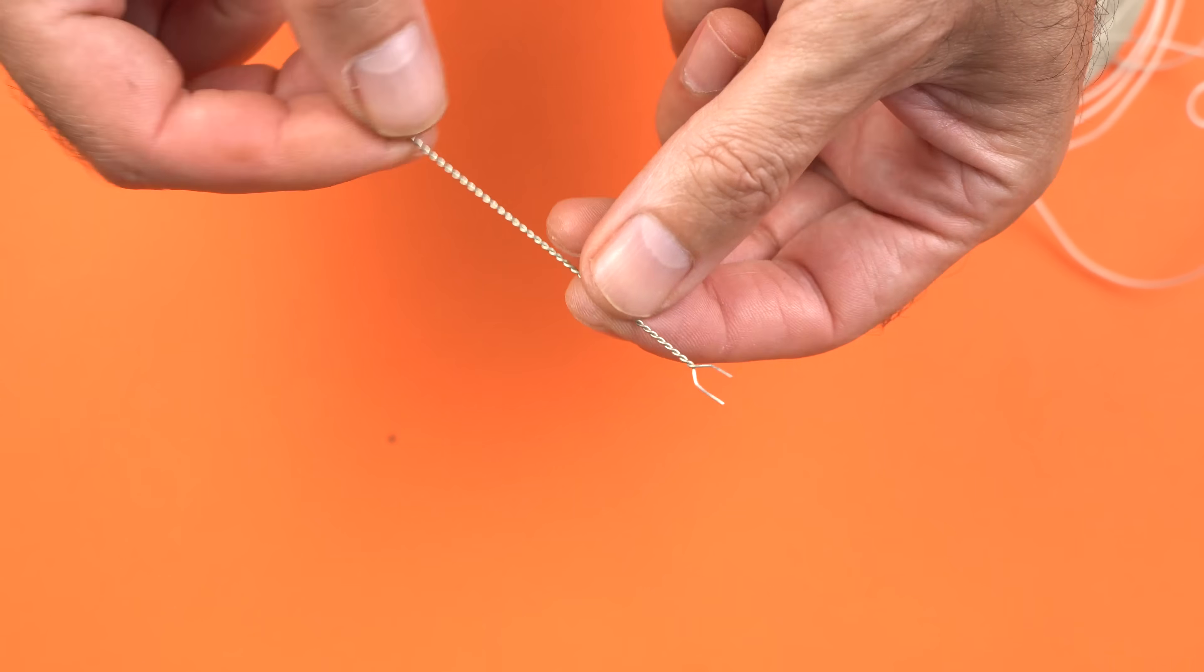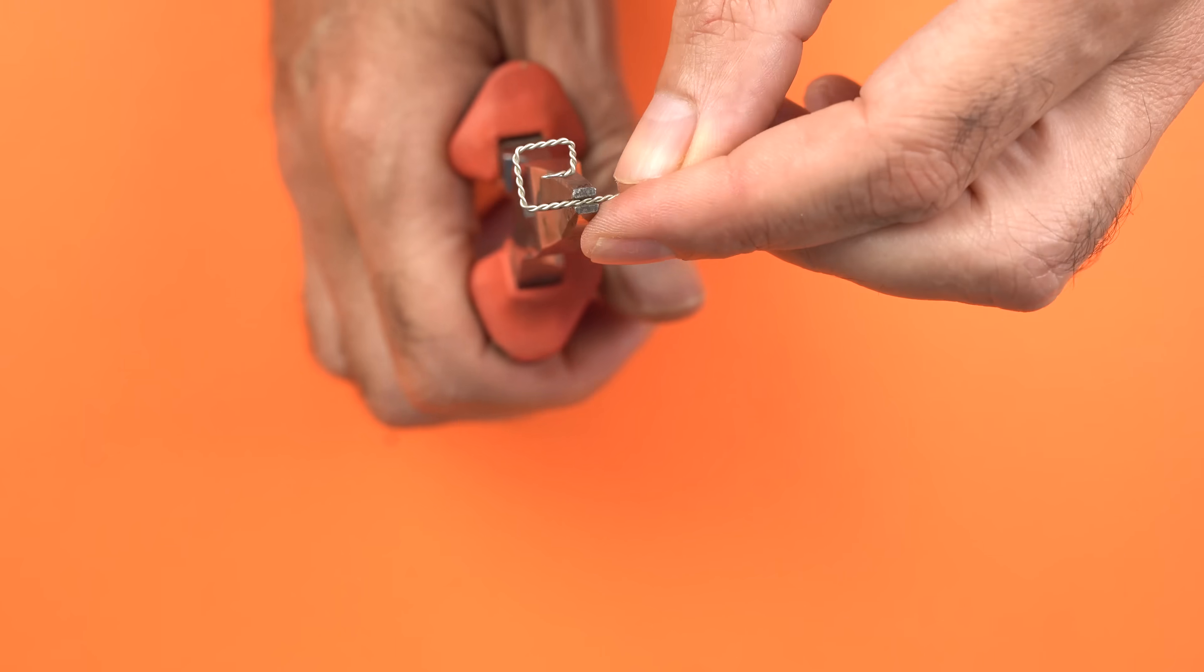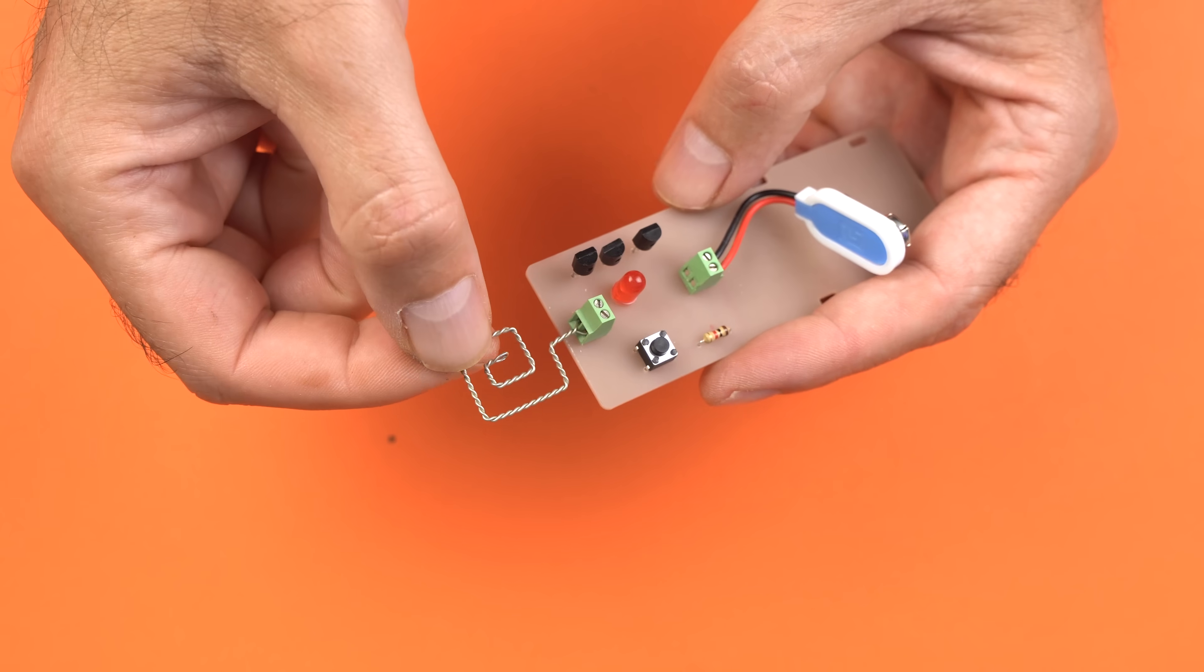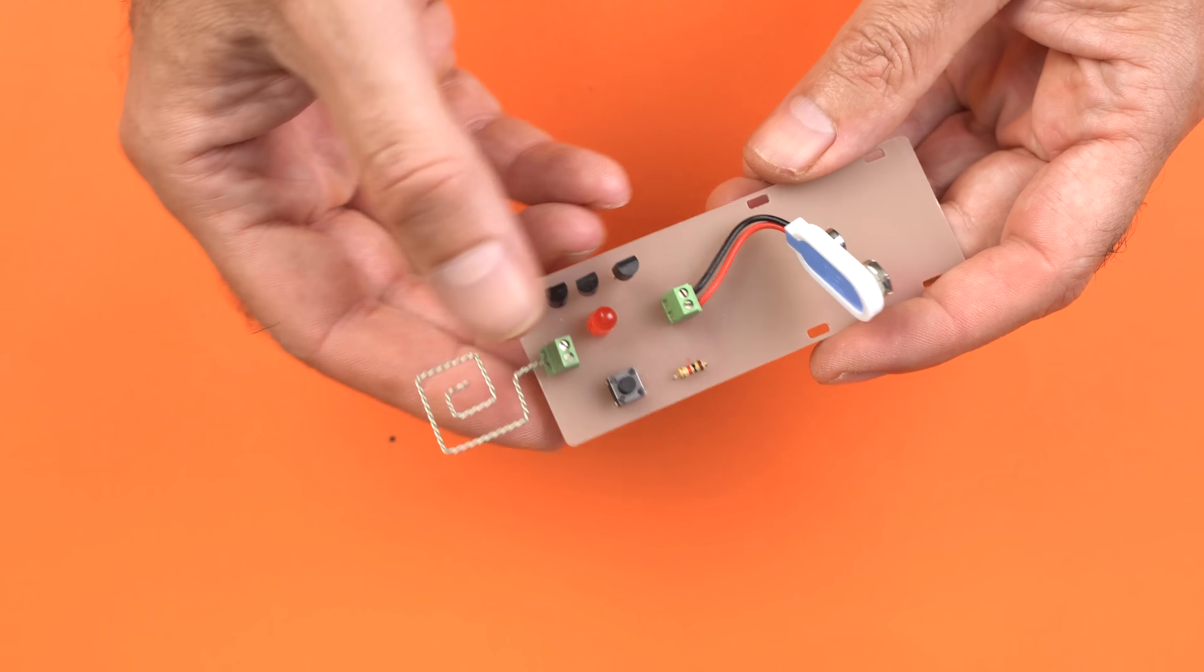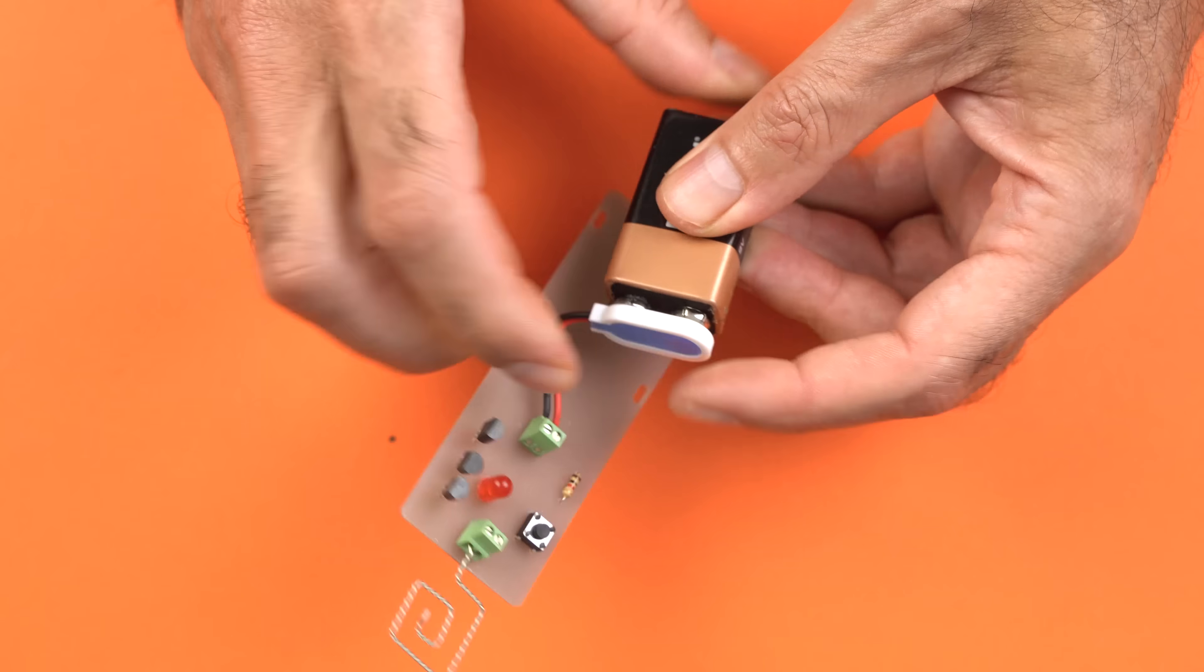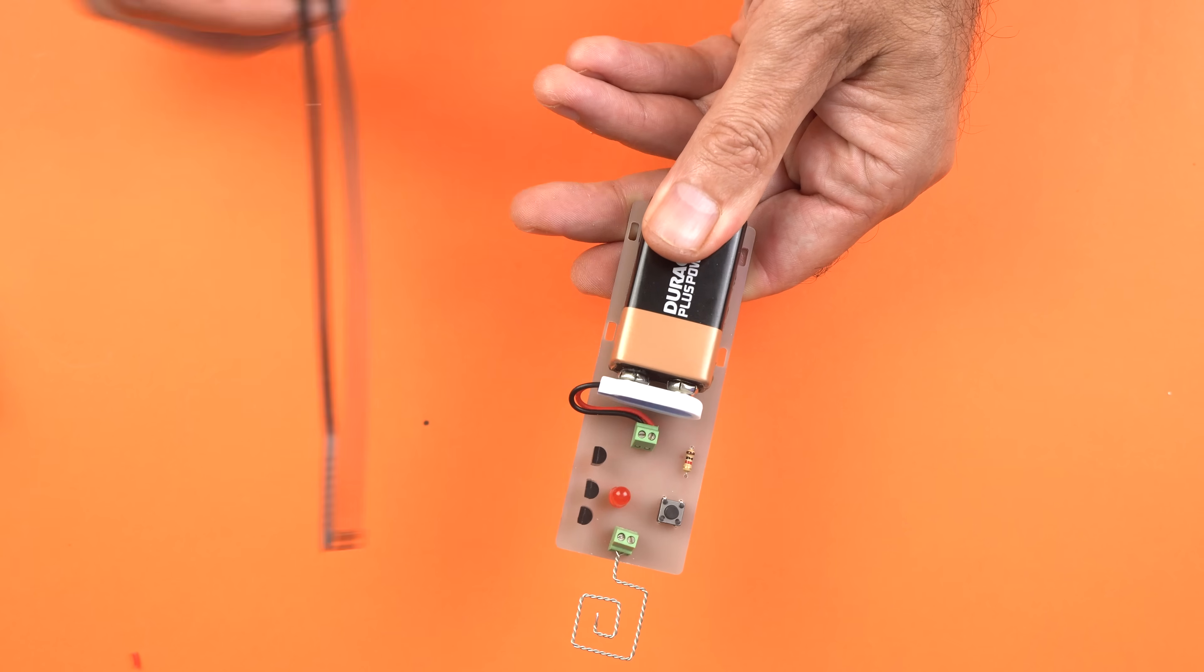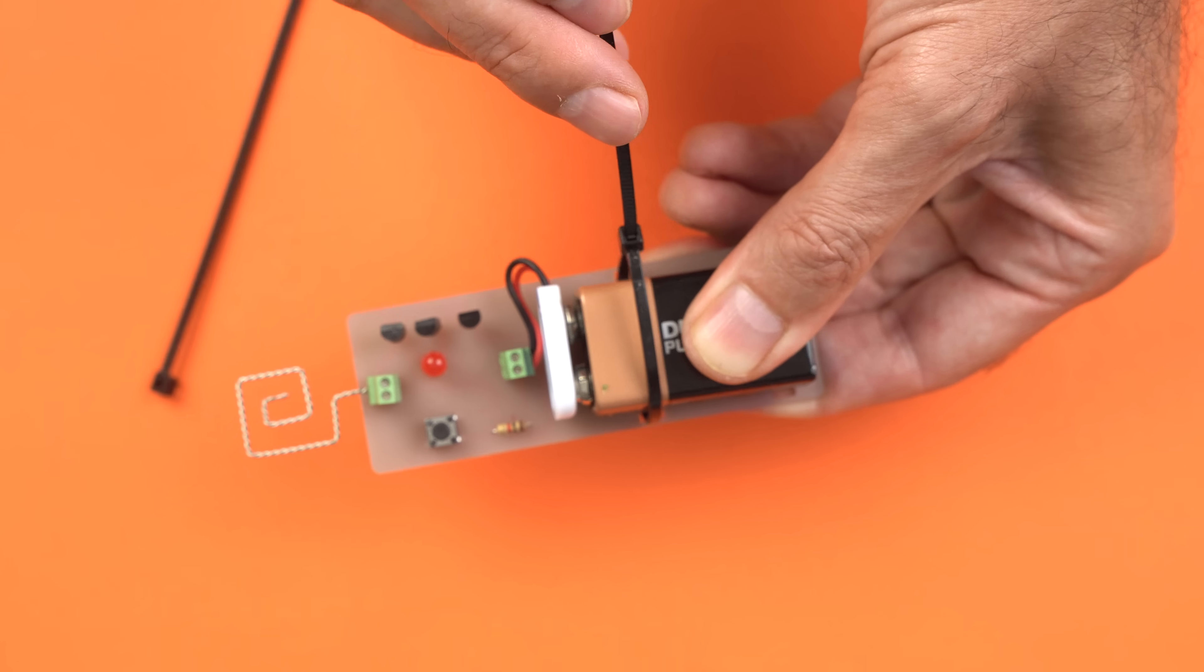The antenna will be built using the same method shown at the beginning of the video, but in this version, it features two leads that will be inserted into a two-pin header connector. As the final step, I'm going to secure the 9V battery to the PCB using two zip ties.